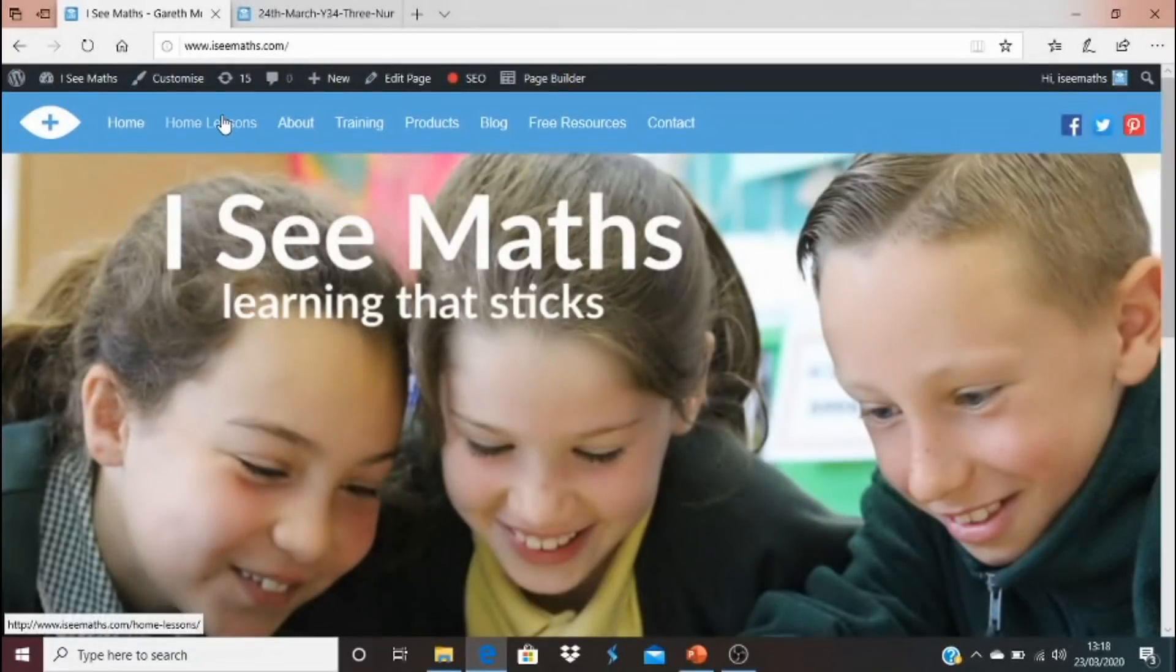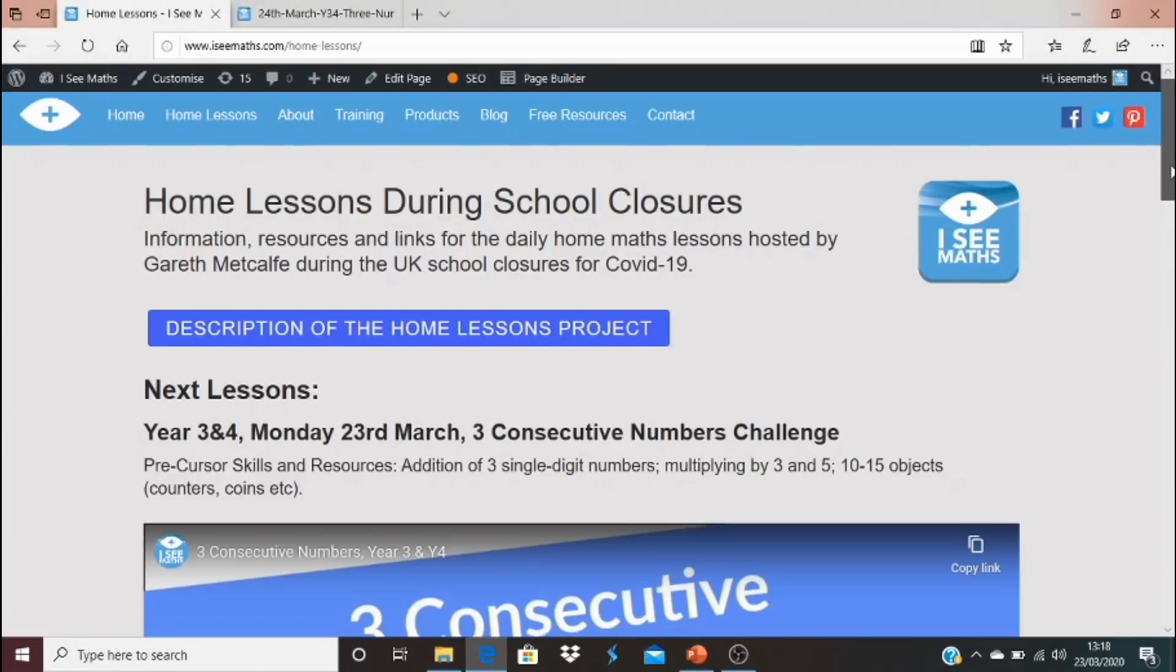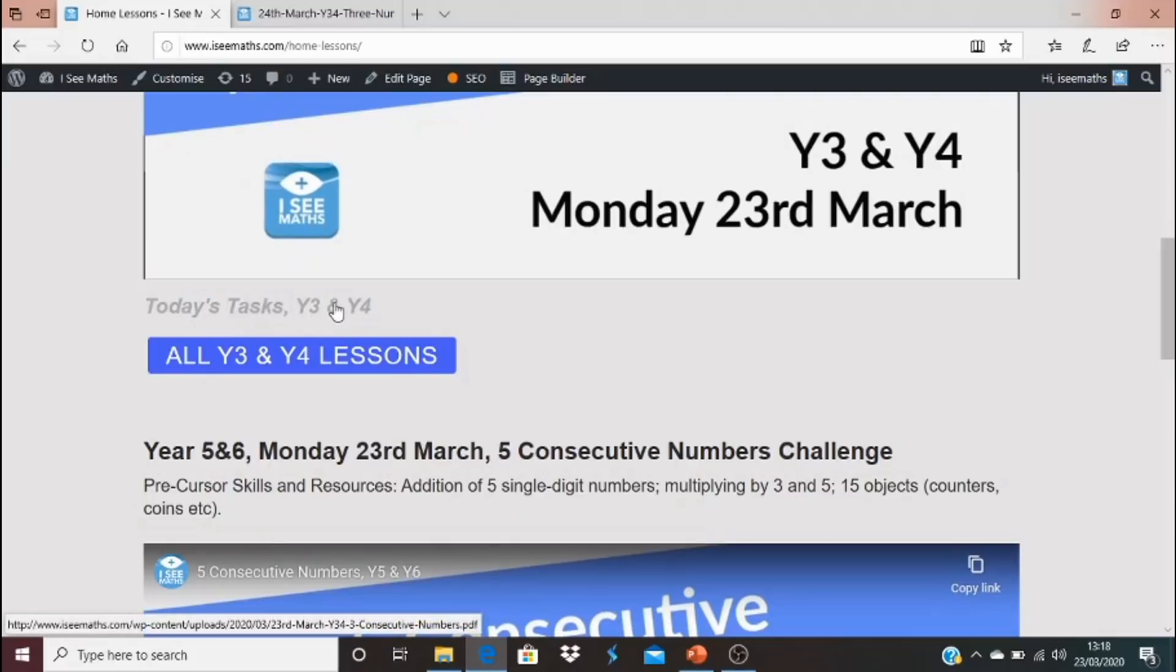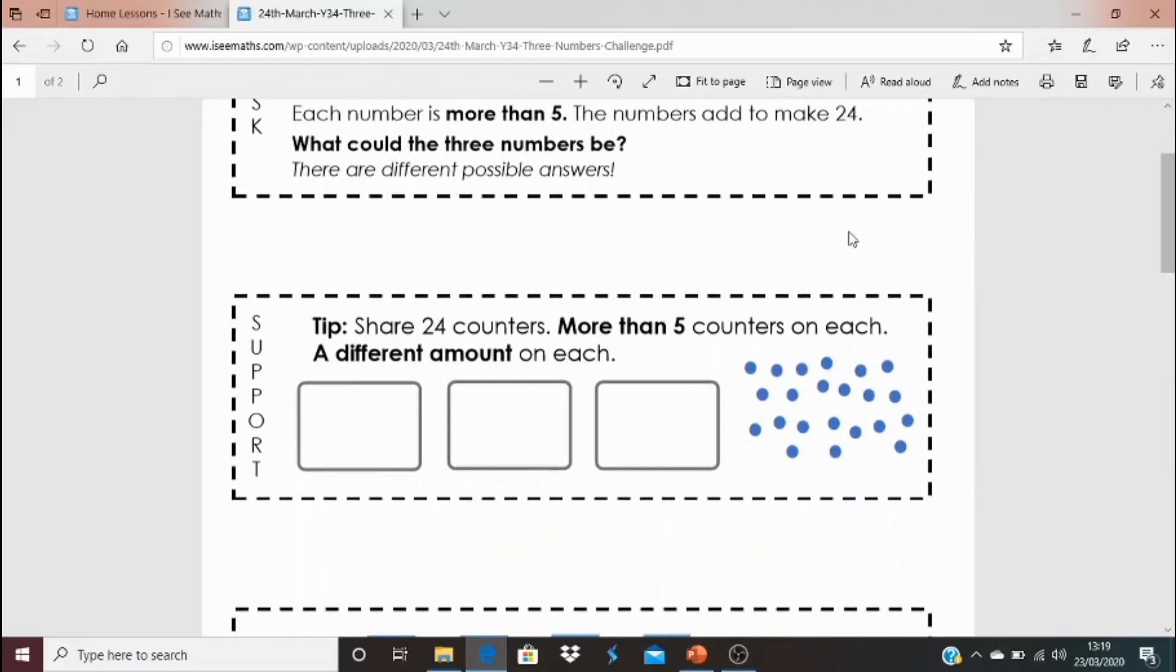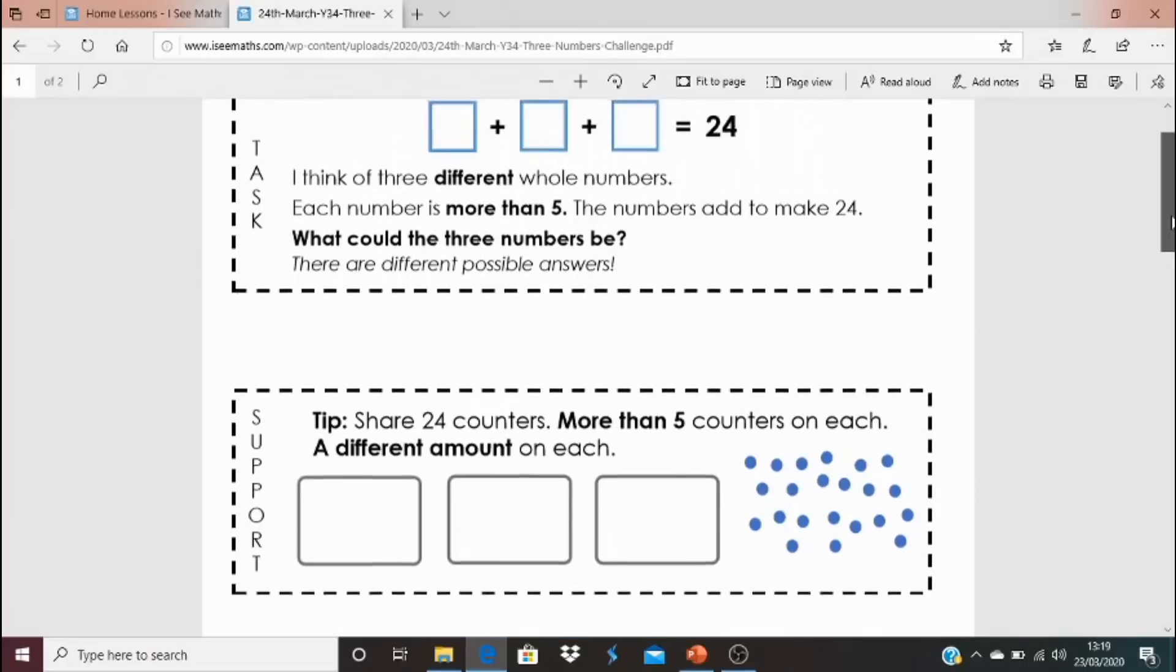So very fine people of year three and four. Let's have a look at today's tasks. Again icmass.com home lessons. If you're not already on this page it will bring you to here. Now underneath the main video there's a little tab that says today's tasks year three and year four. That wording will always stay the same and that will open up this file here. Today's challenge. Now your task is this one. This is a task for everyone. I think of three different whole numbers. Each number is more than five. The numbers add to make 24. What could the three numbers be? There are different possible answers. I wonder how many different possible answers you can find. Now if you want some help or a way to access that task is to use this prompt here. The support tip might help and it talks about what you can do if you're finding it a bit difficult. Now you might not need to do that but that's really helpful if you think you need help with this challenge.